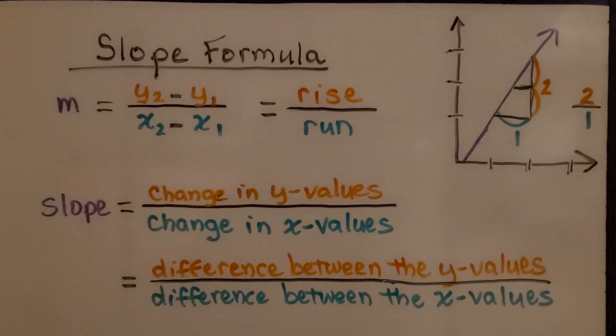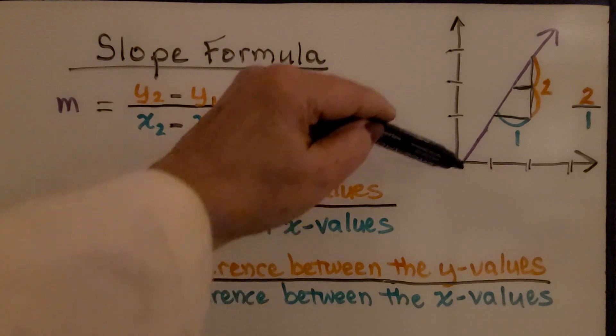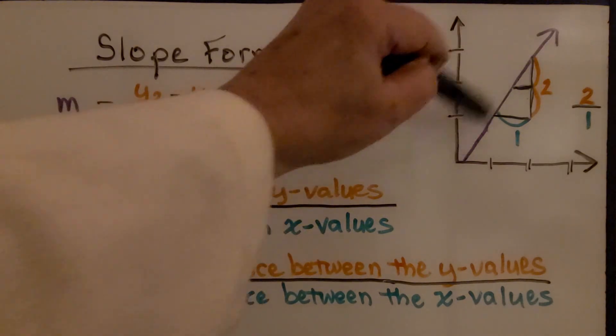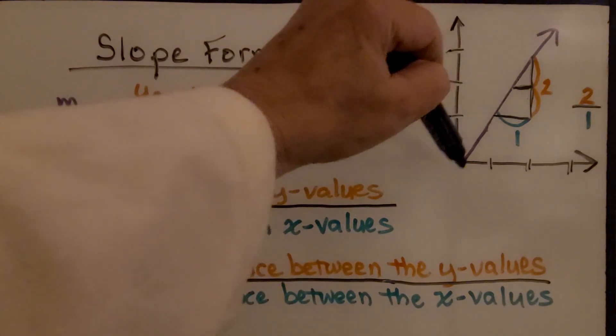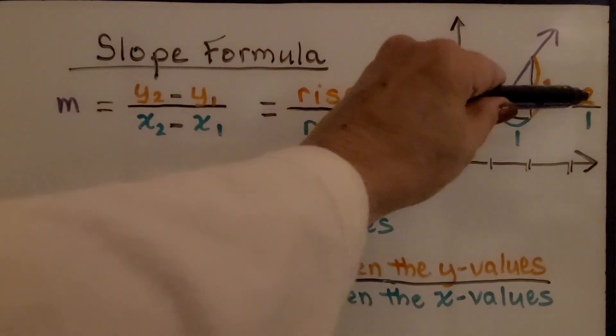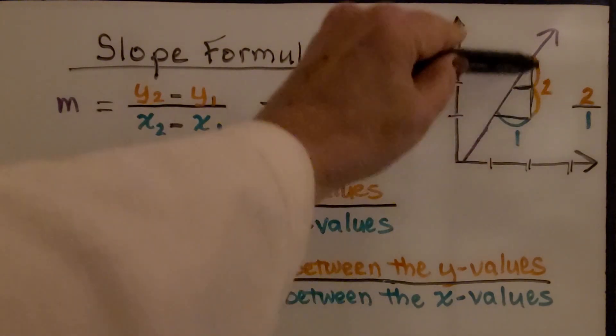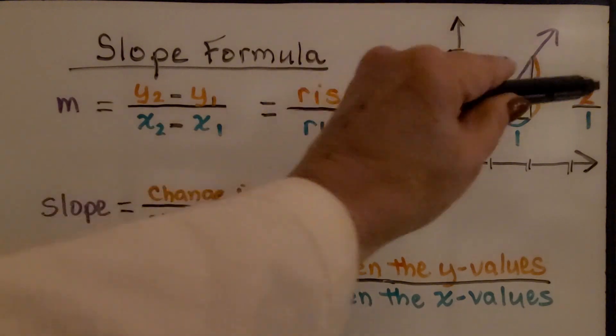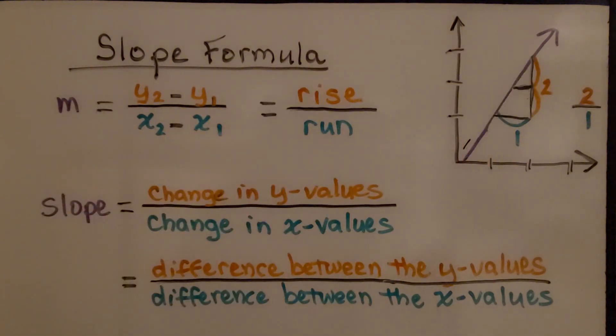The rise and run for this graphed line would be 2 over 1. The slope would be 2 over 1. That would be the unit rate.